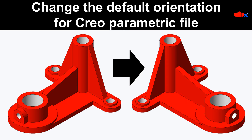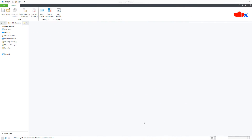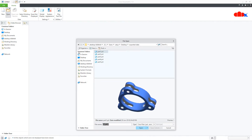Hello friends, Satyendra here. In this video, let's change the default orientation for a Creo Parametric file. We will reorient a Creo Parametric file as per our requirement. In my previous video, I did the same thing for an imported file; now in this video, I will do this for a Creo Parametric file. I have 5 different parts with me that I will use to explain the complete concept.